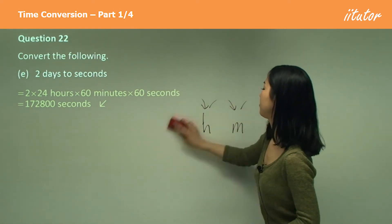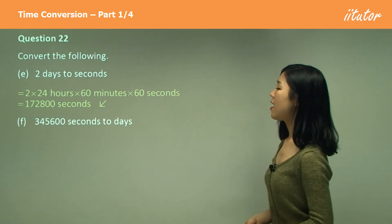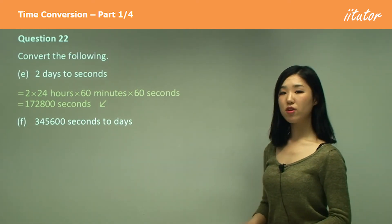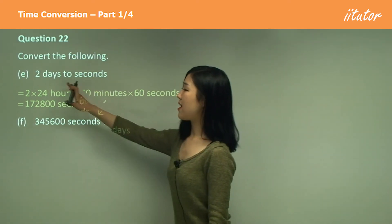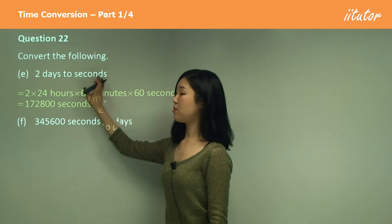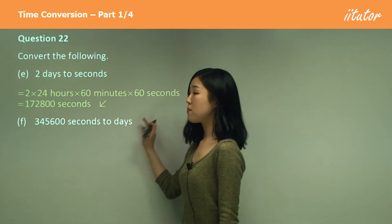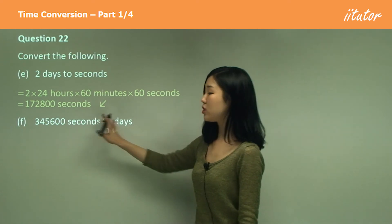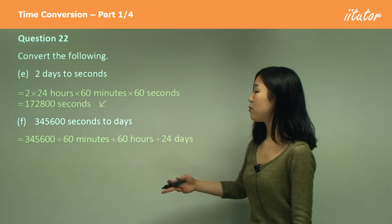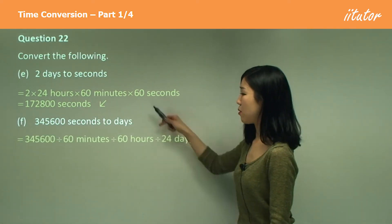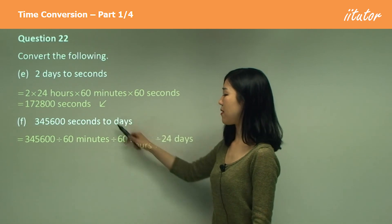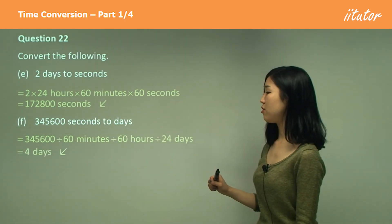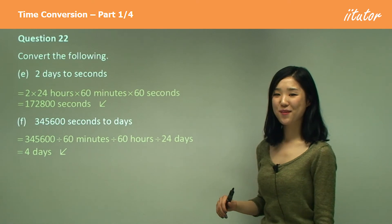Seconds to days. We actually have that diagram from before — this was days to seconds, and now it's seconds to days. We do the same thing, but because it's small to large, we divide. So we divide by 60, divide by 60, and divide by 24, which should give four days.